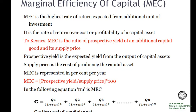Marginal efficiency of capital is the highest rate of return expected from an additional unit of investment. It is the rate of return over cost, or profitability of a capital asset. According to Keynes, MEC is the ratio of prospective yield of an additional capital good and its supply price. That is, MEC is determined by prospective yield and supply price.